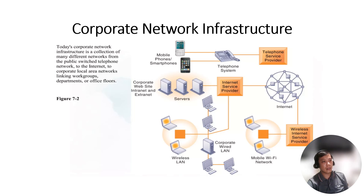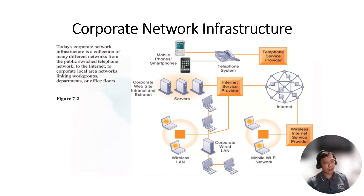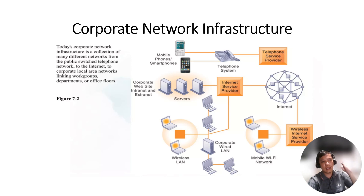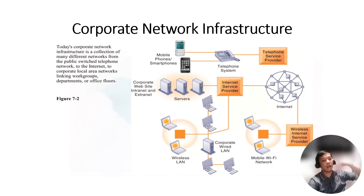Here is the corporate network infrastructure. The corporate network infrastructure is comprised of hardware, software systems, and device drivers, and it enables computing and communication between users, services, and devices. As shown in the slide, the telephone service provider aids the telephone system and mobile phone smartphones. The internet provides the internet connection as well as the wireless internet connection. You can see the mobile Wi-Fi network, the corporate wireless LAN, and the servers, corporate website, intranet, and extranet.